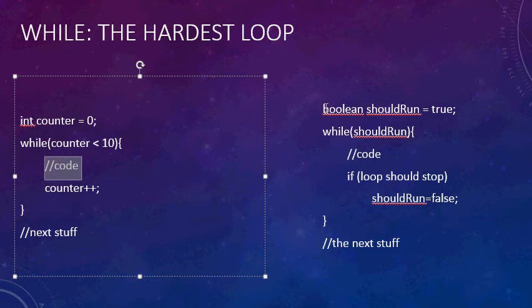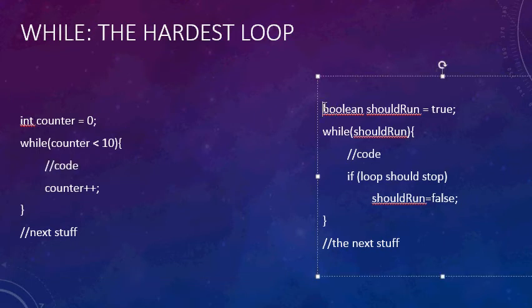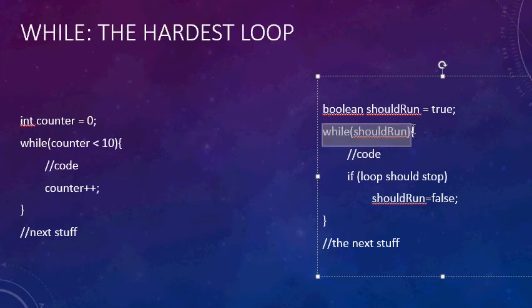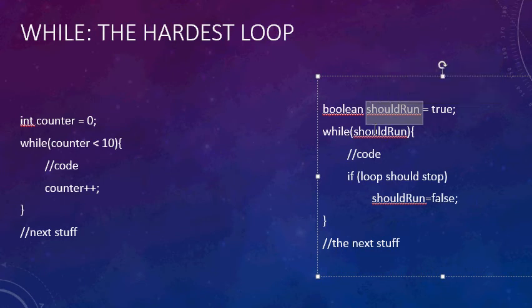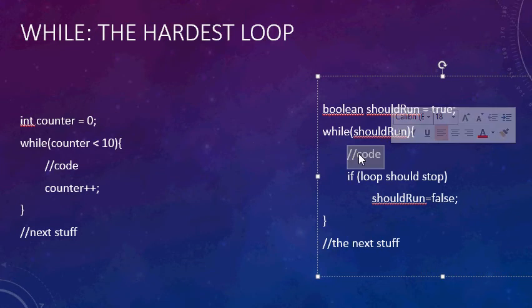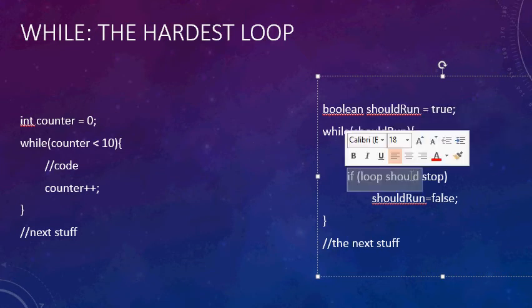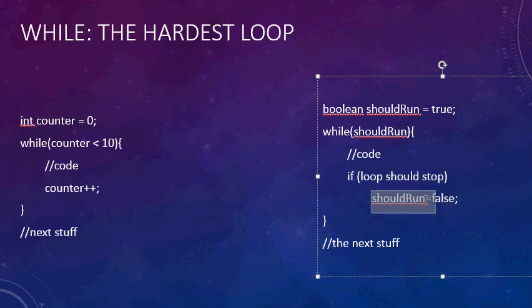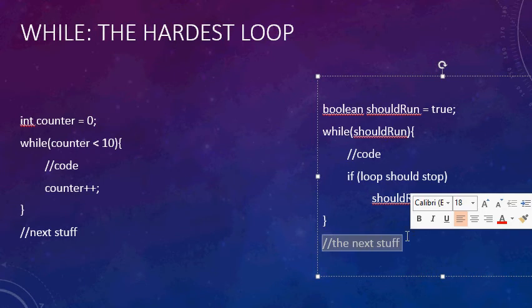Here's a more complex while loop example using a boolean. We declare 'boolean shouldRun = true' — we set it to true initially, because if we set it to false the loop would be skipped entirely. This loop executes its code over and over until some condition inside an if statement becomes true, at which point you set shouldRun to false. When it comes back to the top of the loop, shouldRun is false, so you exit and execute whatever comes after the loop.